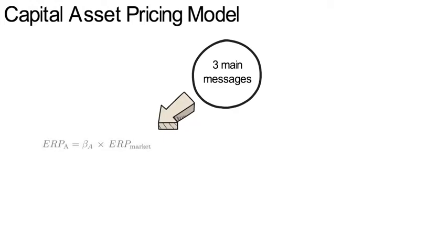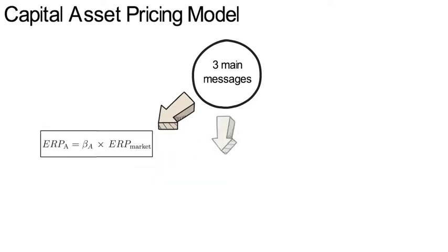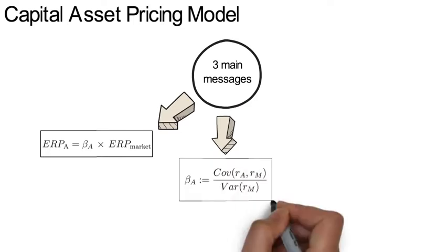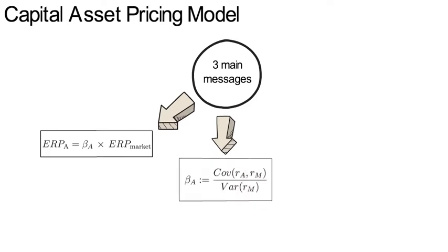First, an asset's expected risk premium is proportional to the expected market risk premium. Second, the proportionality coefficient is called beta, and it stands for the covariance of Asset A's return with the market divided by the variance of the market return.